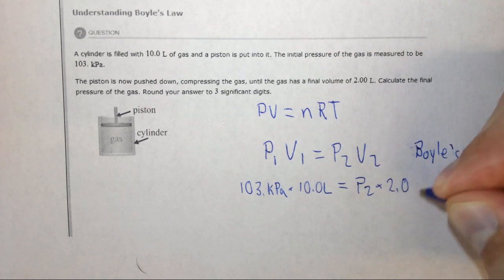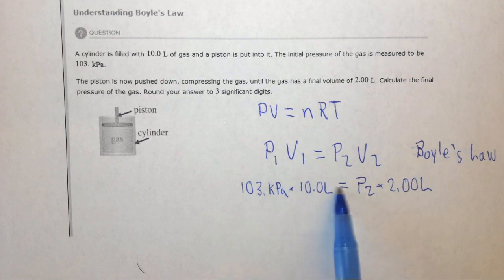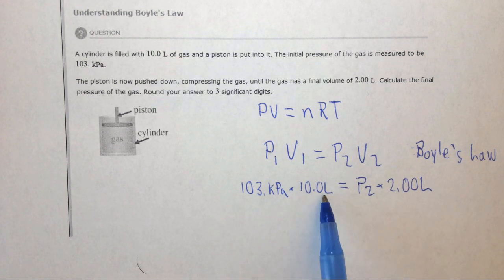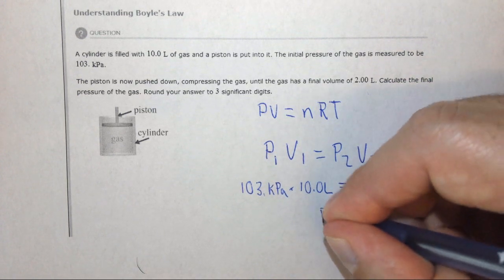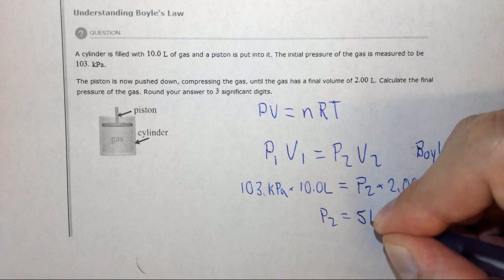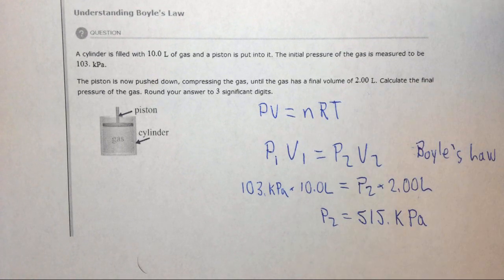Multiply the two numbers and then divide by the number next to the variable. So 103 times 10 divided by 2 gives P2 equals 515 kilopascals.